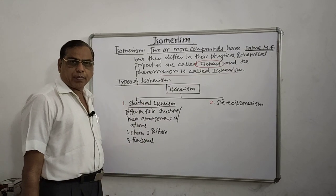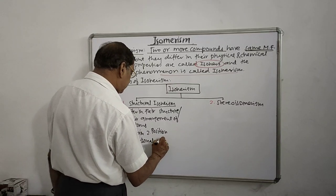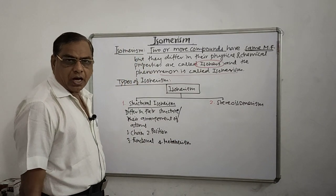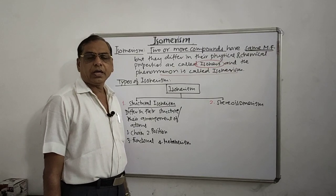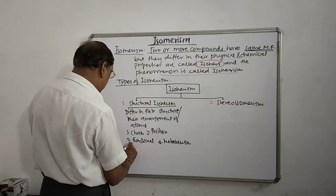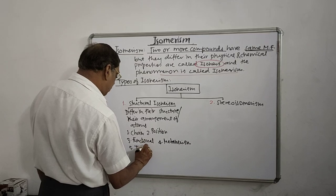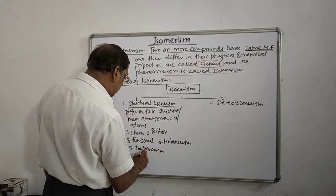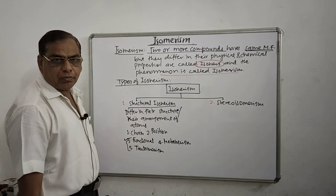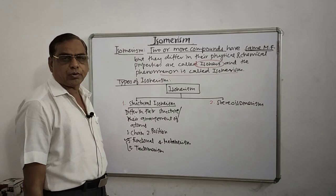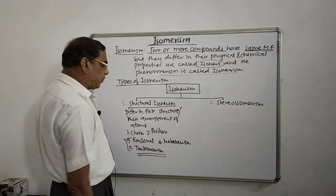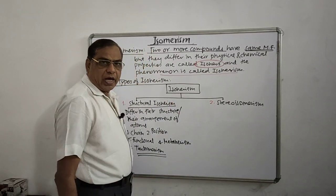The third type is called functional isomerism — they have the same molecular formula but differ in their functional group. Tautomerism is a special type of functional isomerism in which a dynamic equilibrium exists between two different interconvertible isomers.